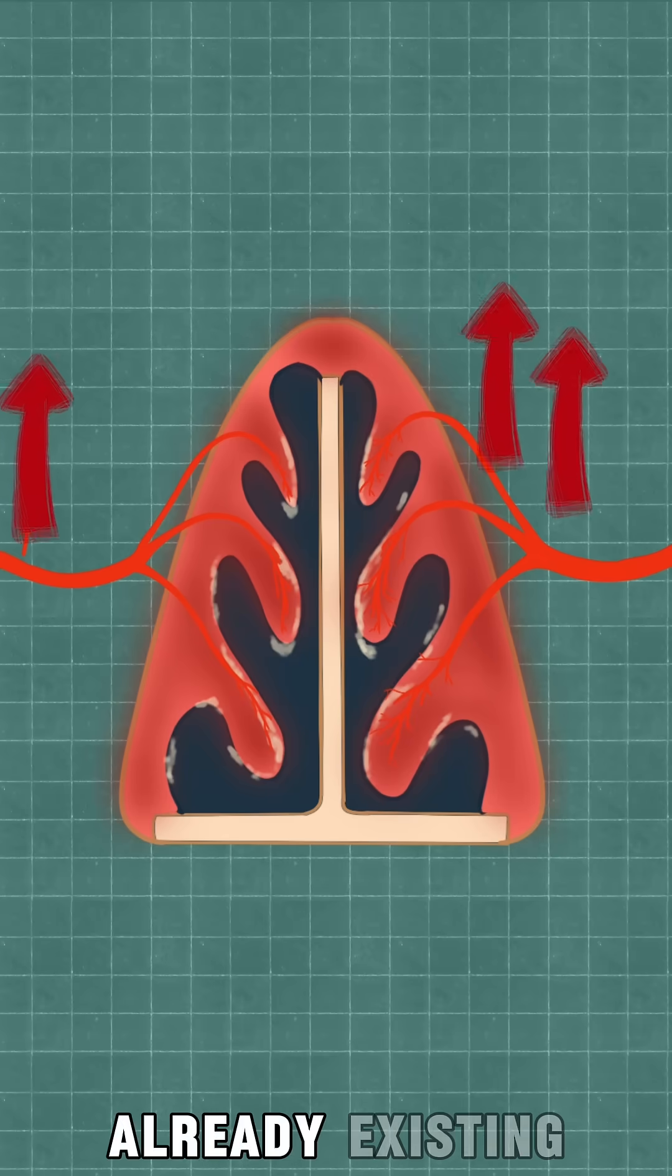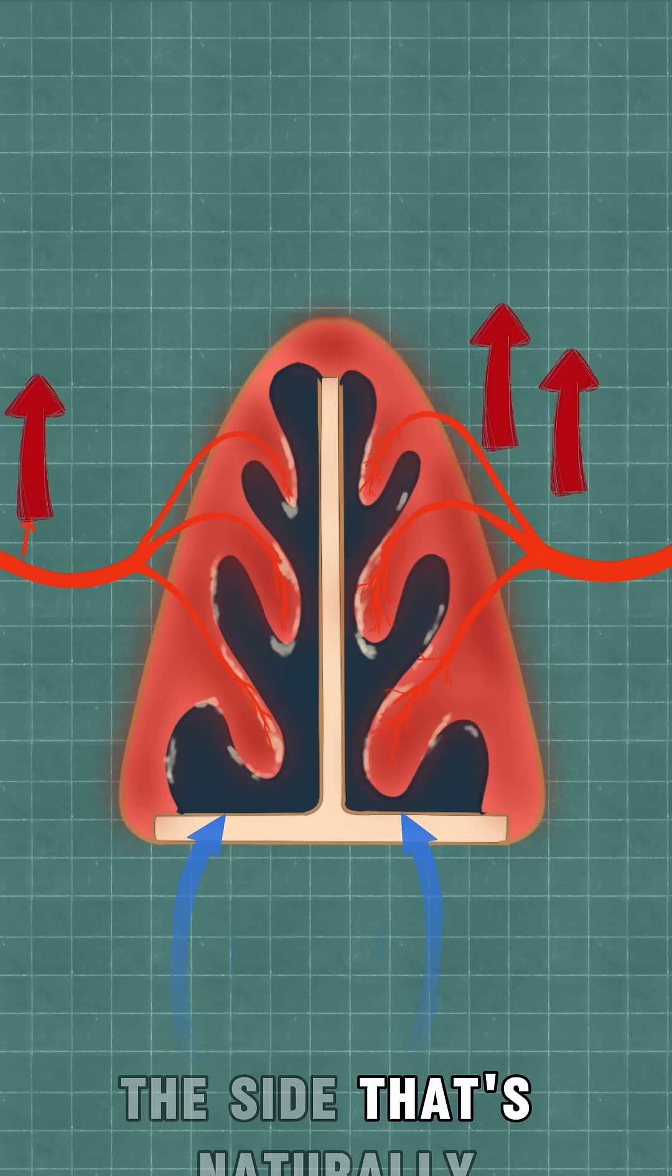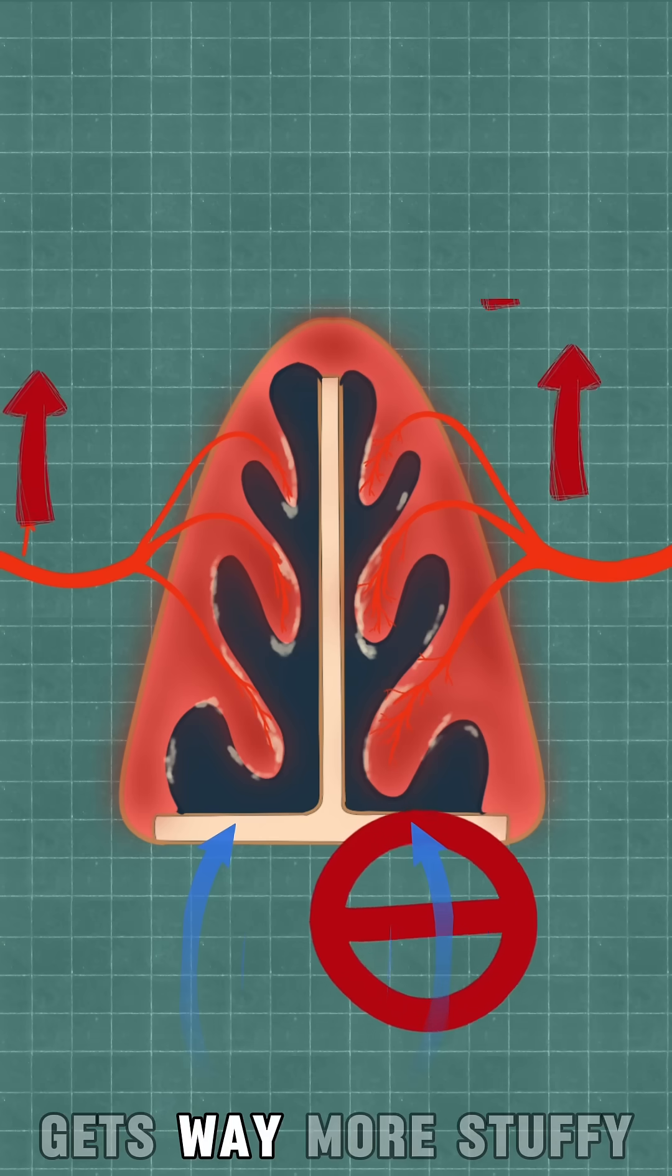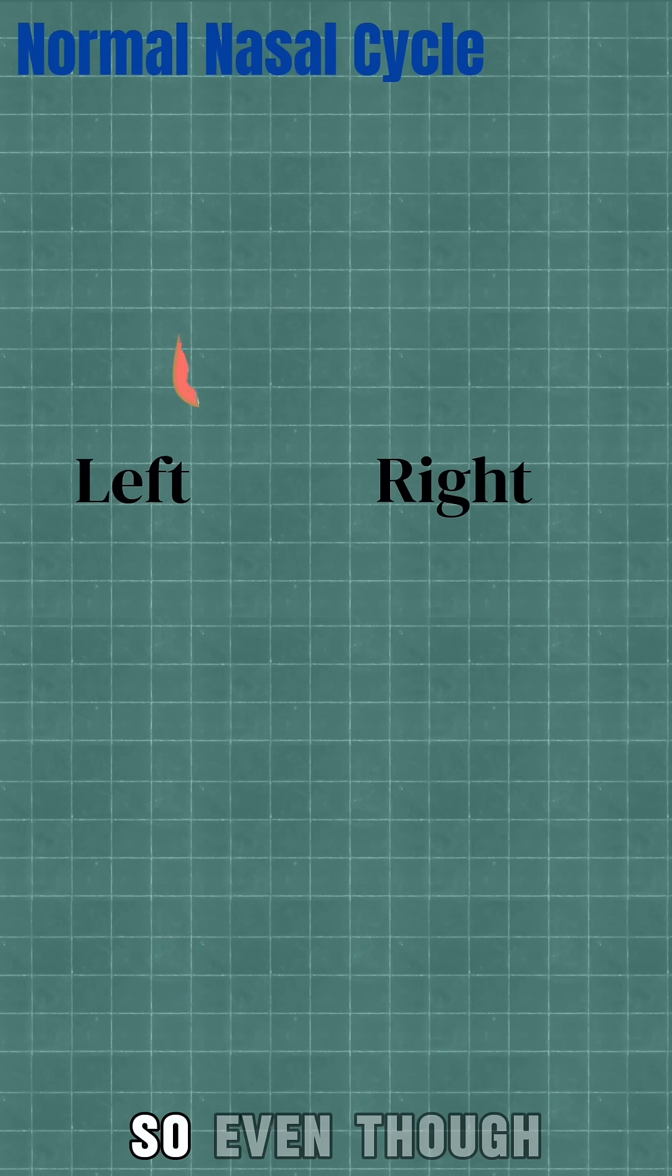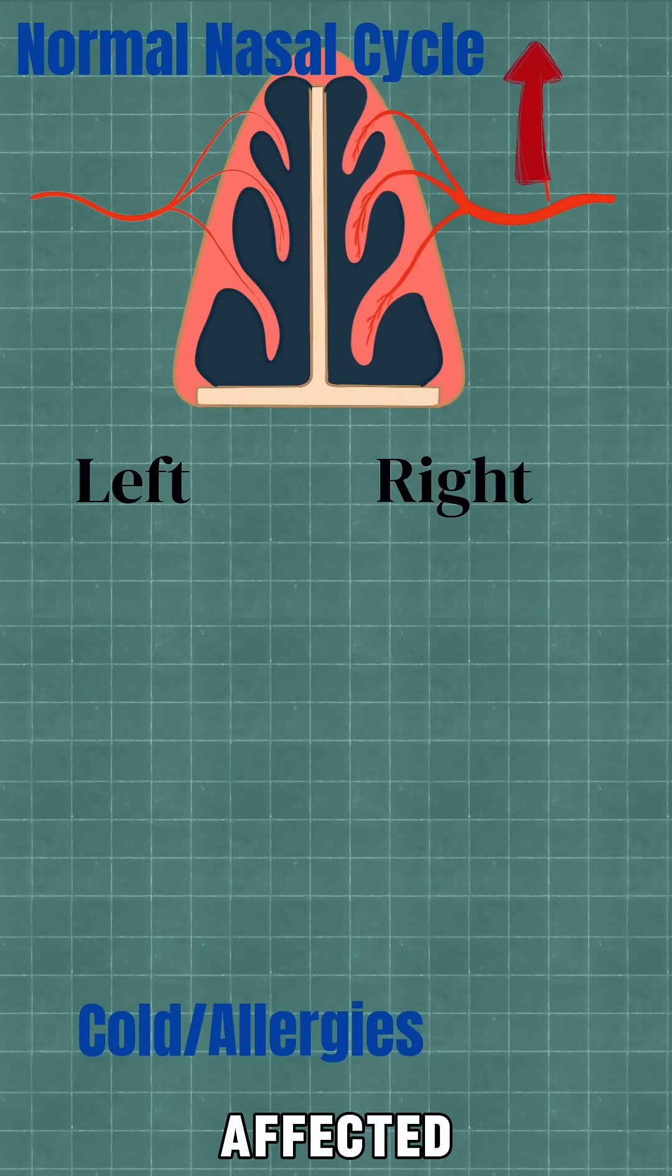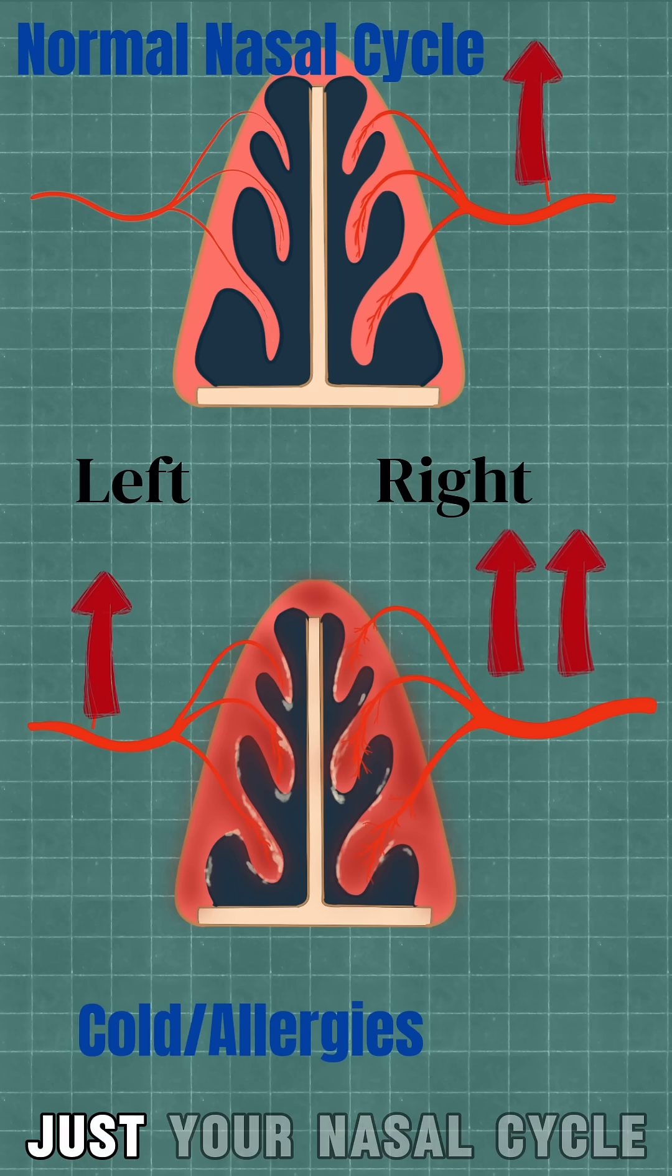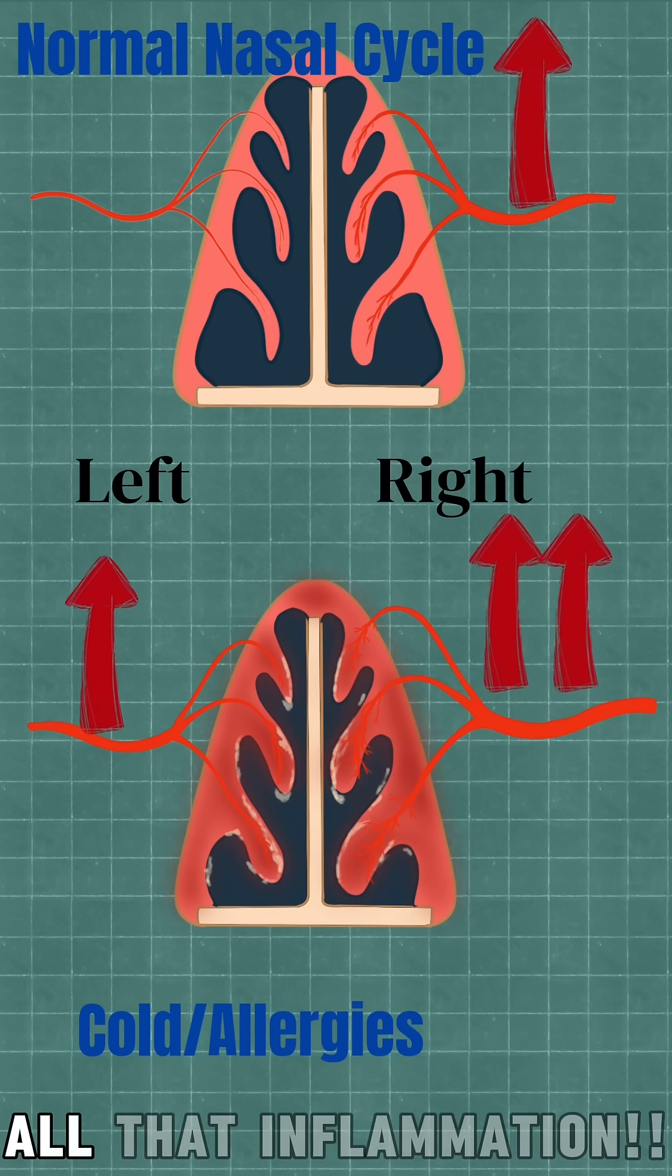Because of the already existing nasal cycle, the site that's naturally more swollen during that part of the cycle gets way more stuffy. So even though both nostrils are affected by the cold, the alternating blockage is just your nasal cycle working in overdrive on top of all that inflammation.